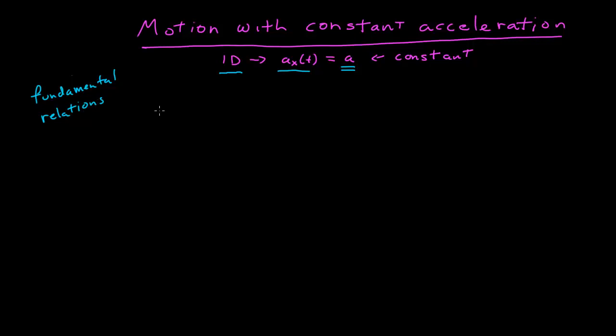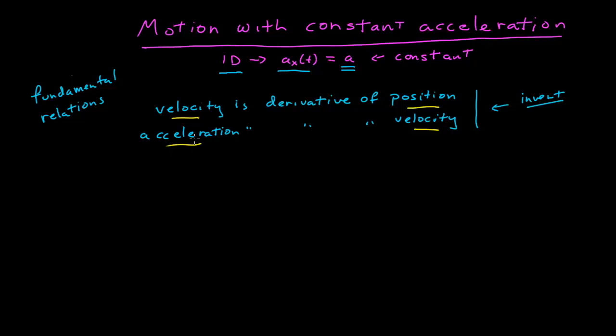Those tell me that velocity is derivative of position with respect to time, and acceleration is derivative of velocity with respect to time. And by inverting these, the position is the anti-derivative of the velocity, the velocity is the anti-derivative of the acceleration, and I can essentially use that to solve any kinematics problem. So why do I want to go through a whole bunch of math now for this special case of motion with constant acceleration?